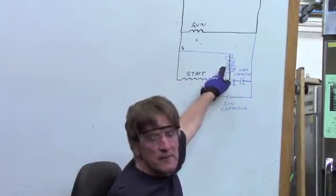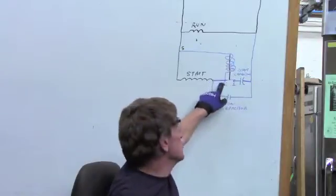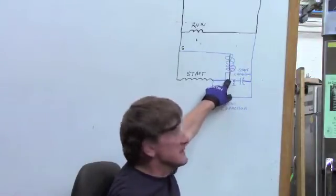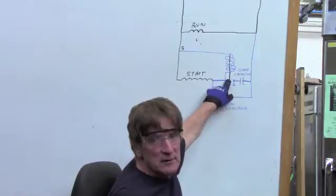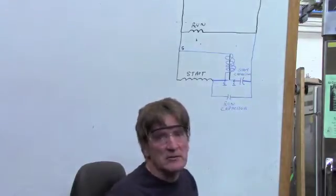In that coil, I have a metal rod, and this metal rod is used to pick up this set of contacts after I start, so that the start winding gets pulled out after the motor's actually started.